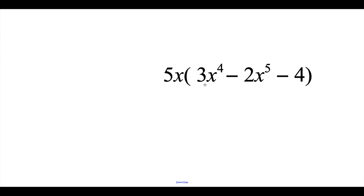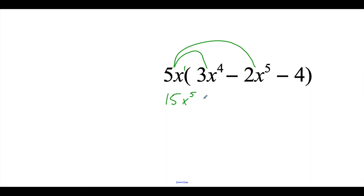Here we've got 5x times 3x to the 4th minus 2x to the 5th minus 4. I'm going to do my distributive property. So 5x times 3x to the 4th: 5 times 3 is 15. Now this x technically has a 1st power on it, so x to the 1st times x to the 4th gives me x to the 5th. Then if I take my 5x times this negative 2x to the 5th, 5 times negative 2 is negative 10. x to the 1st times x to the 5th — I add those exponents together, so I get x to the 6th. And then I take the 5x times the negative 4. 5 times negative 4 is negative 20, and this 4 doesn't have any extra x's, so that's just going to stay as negative 20x.